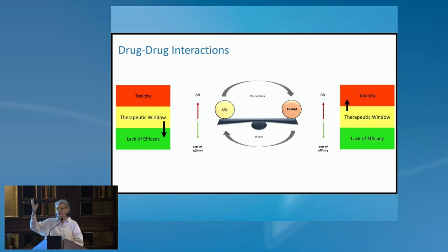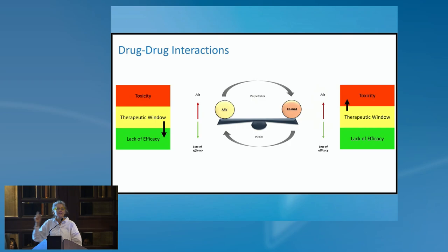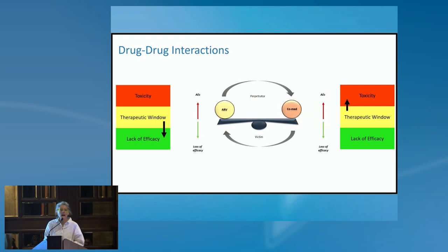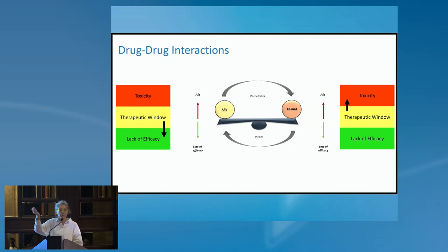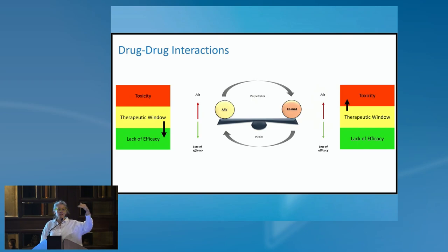Today, using drugs that are not perpetrators of interactions makes life much easier for both prescribers and patients. But what we need to be very switched on about is that co-medications can affect the concentrations of the antiretroviral. Bictegravir and doravirine are metabolized by CYP450 3A4; raltegravir and dolutegravir are metabolized by glucuronidation. If I give a drug that induces these metabolic pathways, my antiretroviral concentrations will be decreased, putting the patient at risk of virological failure with resistance.